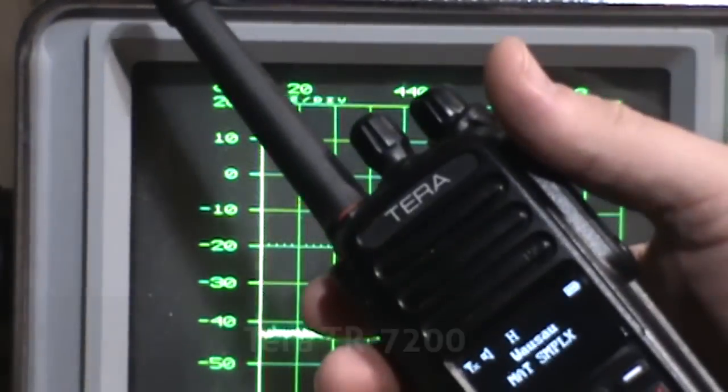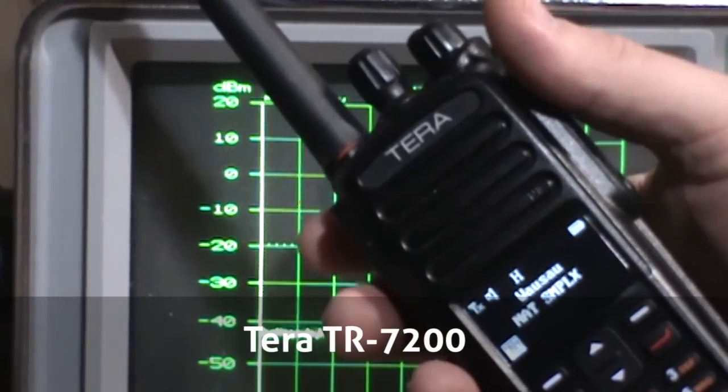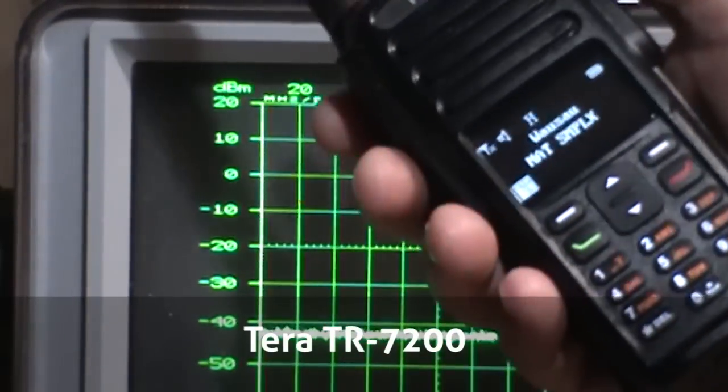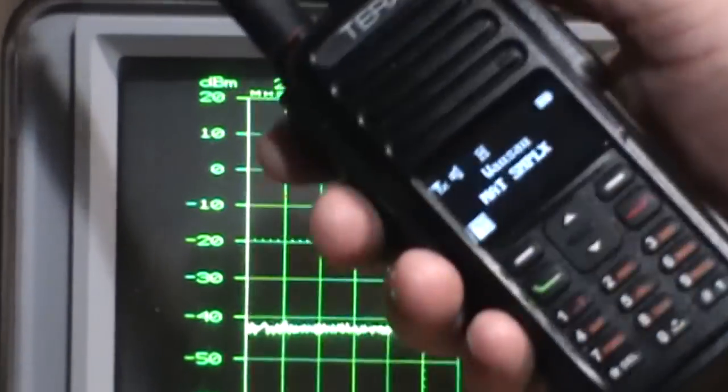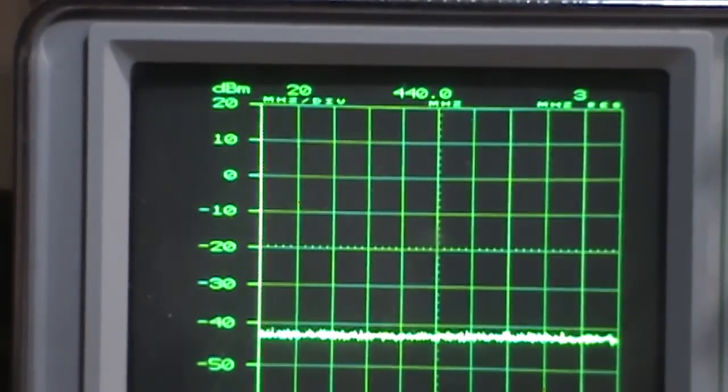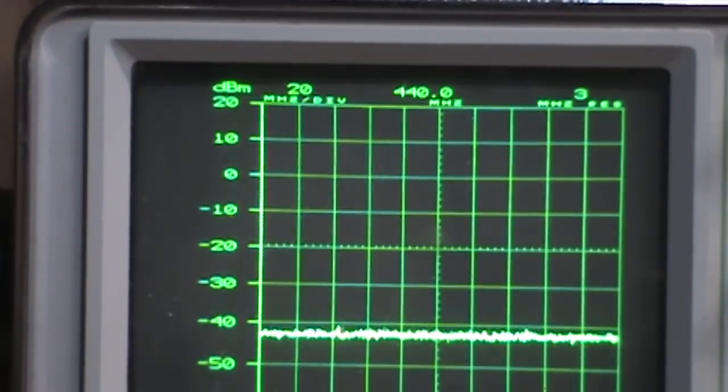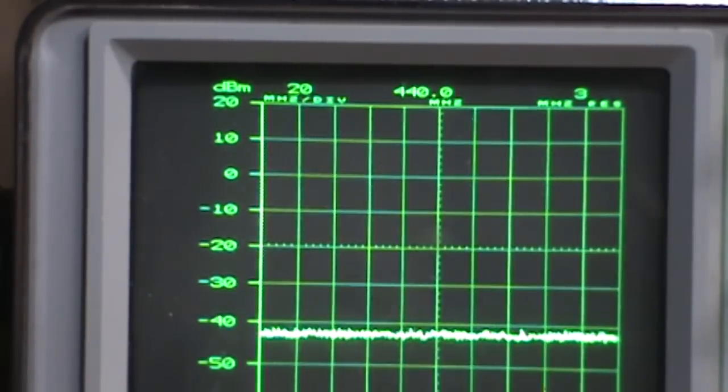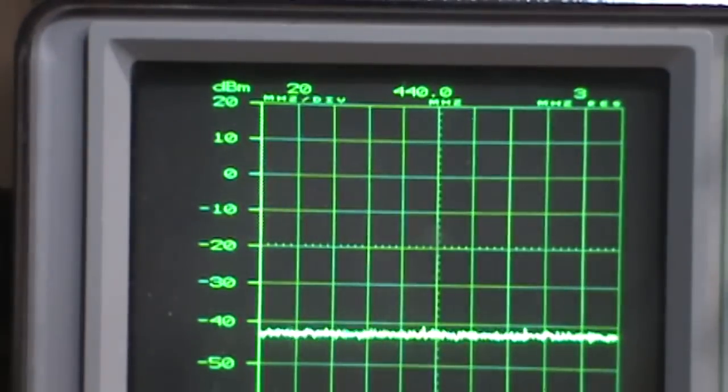Next, our Terra TR7200. Again, now this one is only a VHF radio, so it's not like there's even circuitry in here for 70 centimeters. And keying up there. Nothing there as well.